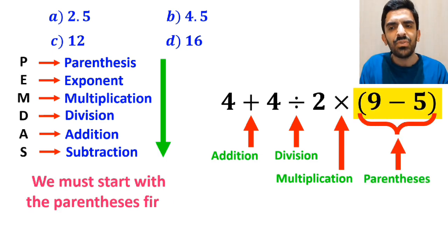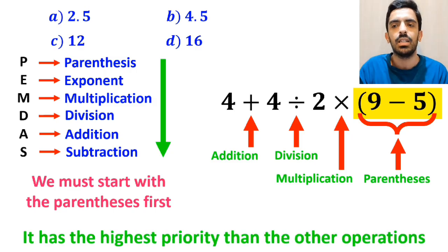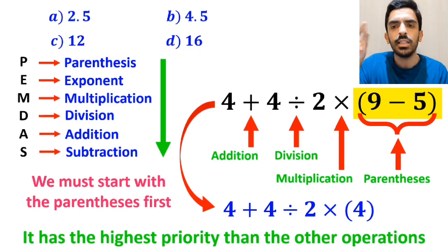We must start with the parenthesis first, because it has the highest priority of all the operations. So, instead of this expression, we can write 4 + 4 ÷ 2 × 4.